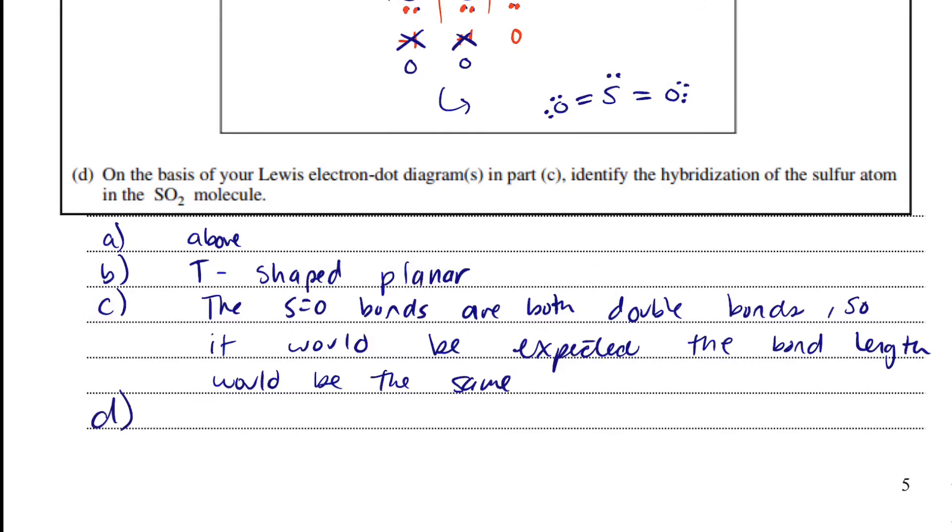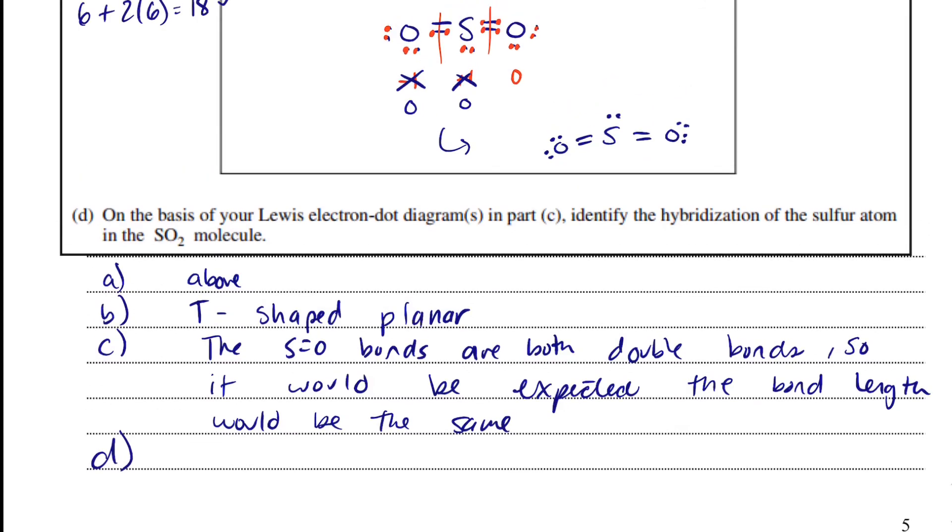Okay, now in part D it says, based on your Lewis dot diagram in part C, identify the hybridization of the sulfur atom in the SO2 molecule. So its steric number is 1, 2, and then a lone pair, so the number of atoms bonded to the central element plus the number of lone pairs, so we'll get S1, P2, which would probably be represented SP2 on the AP test.